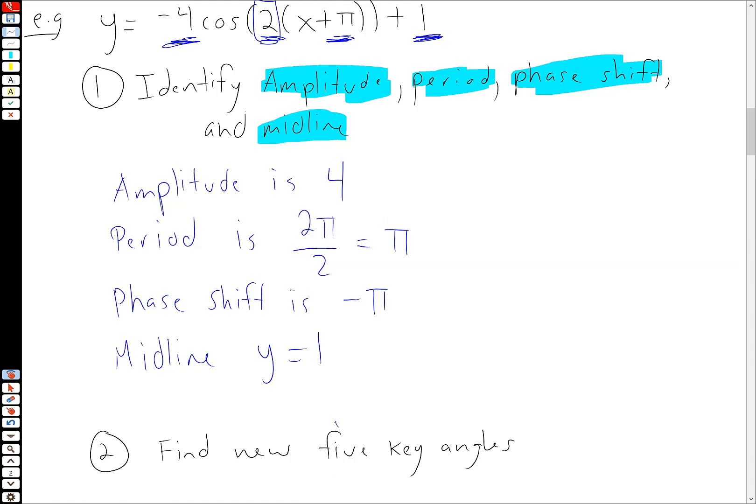So these are things we want to keep in mind when we go to look at our graph. We want to make sure that the distance from the peak to the midline is 4. We want to make sure it has a period of π, that it's been shifted in some way, and that Y equals 1 does cut it in half.